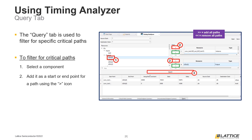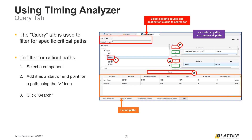Once the start and end points have been configured for a query, click the search icon to begin searching for paths. Any paths that begin and end with any of the start and end points in the To and From sections will appear in the bottom portion of the Query tab window. One final feature of the Query tab is that it can also be used to search for paths containing specific clocks, using the source and destination clock options at the top of the Timing Analyzer window to select which source and destination clocks to include in the path search.